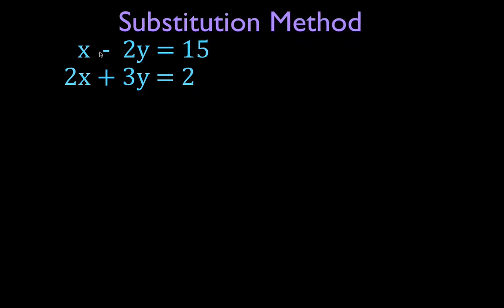We have two linear equations. We are going to solve these two linear equations, and what we mean by that is we are going to find the single pair of x and y coordinates that are a solution to this equation and also a solution to this equation. And because this is the equation of a line and this is the equation of a line, that single pair of x and y coordinates will also be the point where these two lines cross each other. We are going to do this by the substitution method.